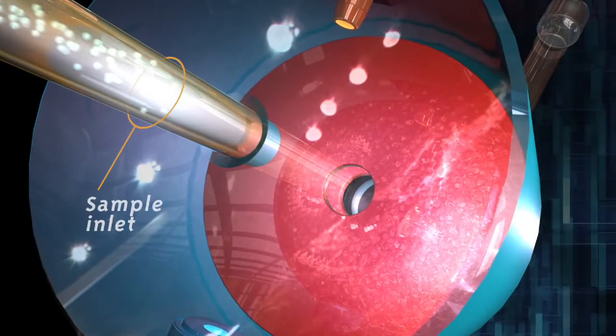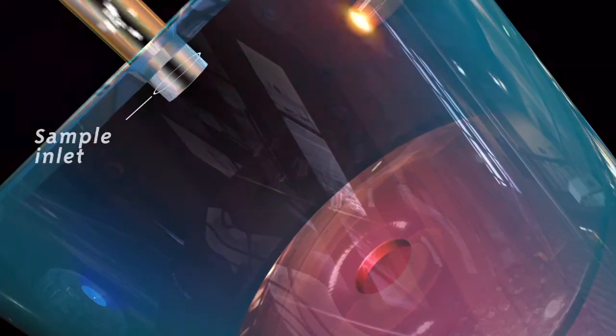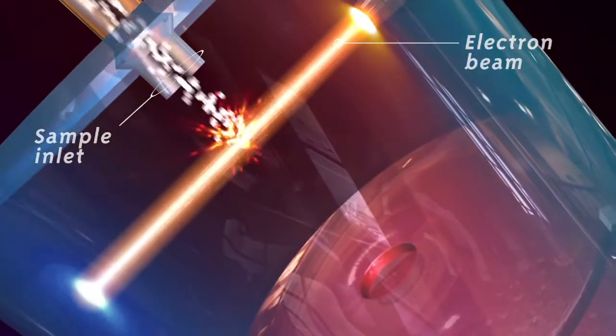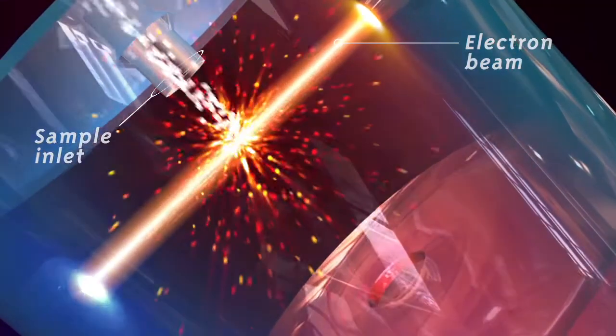In a mass spectrophotometer, a beam of electrons bombards a single chemical sample with enough energy to break apart molecules.